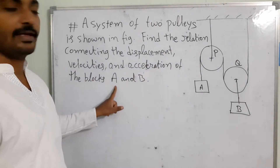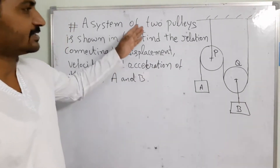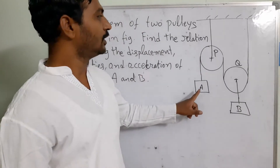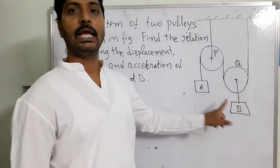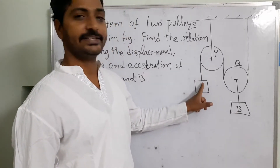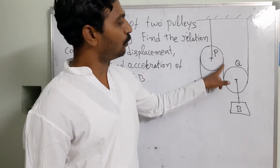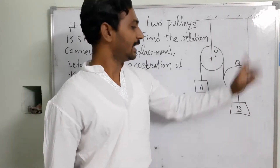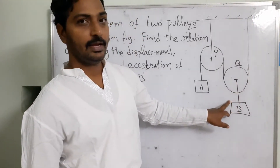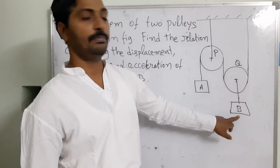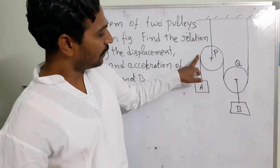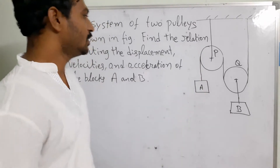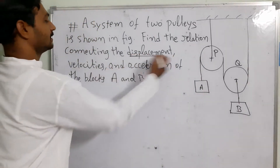We have a system of two pulleys, P and Q, available at the same time, and two blocks A and B connected by a rope. The rope starts from block A, winds up to pulley P, then extends winding around pulley Q, and goes to the support. Block B is hung from the center of pulley Q, and block A hangs from the side of pulley P. We need to find the displacement, velocities, and accelerations of these bodies.